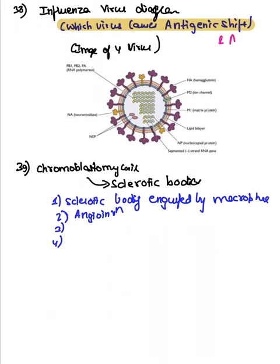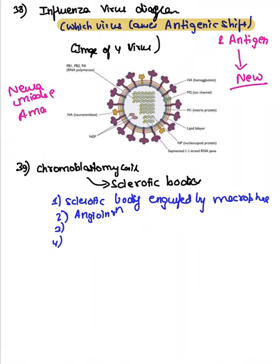A question asked which virus causes antigenic shift — the answer is influenza. Influenza undergoes both antigenic shift and antigenic drift, which is why a new vaccine is needed every year. Treatment uses neuraminidase inhibitors; other drugs include amantadine and rimantadine. The image showed hemagglutinin and neuraminidase confirming this as an influenza question.